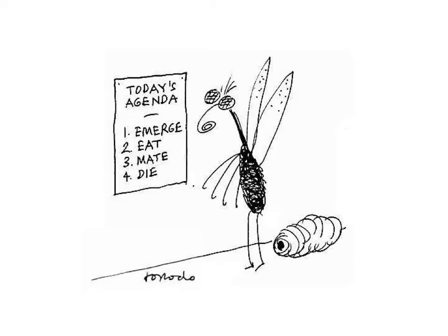I'm Jim Baxter, and this is Lecture 7, Life Histories for General Ecology. As this cartoon suggests, organisms have a specific schedule of life events that they go through. For this insect, its schedule, listed here as today's agenda, dictates that it will emerge from its cocoon, eat, mate, and die.